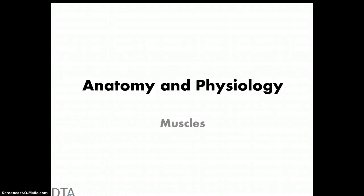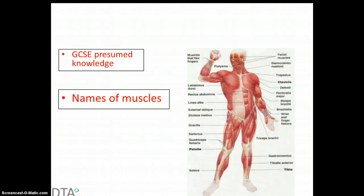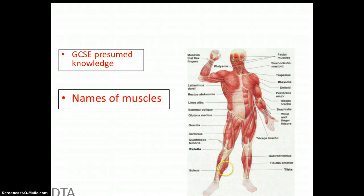Hi and welcome to another of the DTA screencasts. We're looking at anatomy and physiology today, and primarily muscles. At A-level we presume a certain amount of knowledge that you'll have achieved at GCSE, and initially we would expect you to know the names of the muscles. The terminology you would have used might be slightly different — for example, for the calf we call them the gastrocnemius and the soleus. So we need you to identify all of the names of the muscles before you actually start.